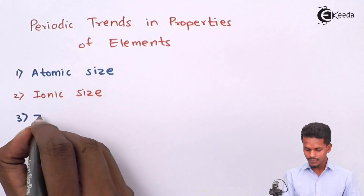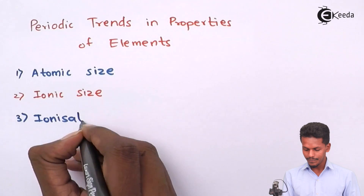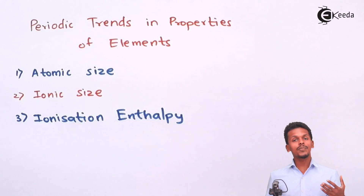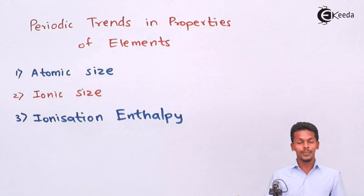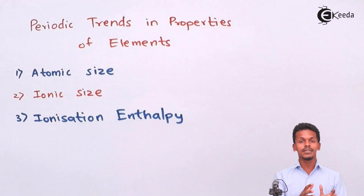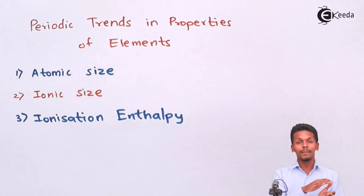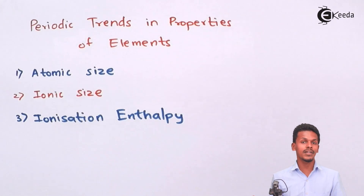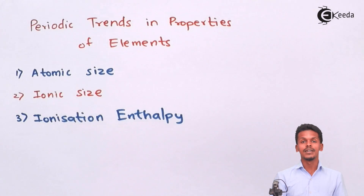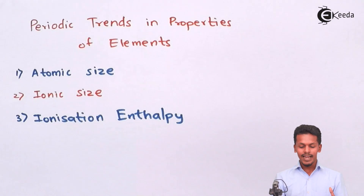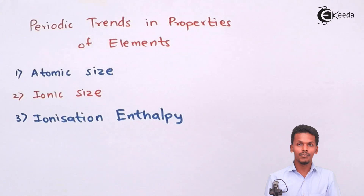The next property is ionization enthalpy. This is a property that shows a trend in the periodic table, changing as we go left to right or top to bottom. Ionization enthalpy is the energy required to remove an electron from the outermost orbit of an atom. We will do a deep analysis of each property.